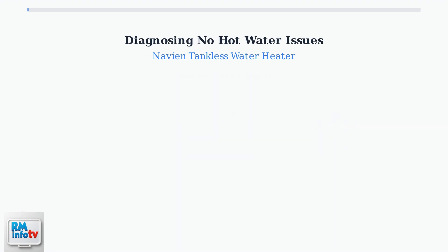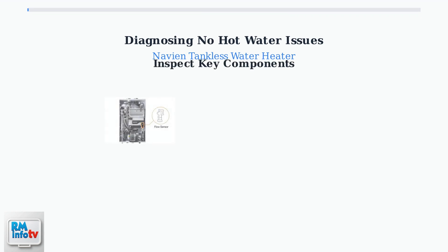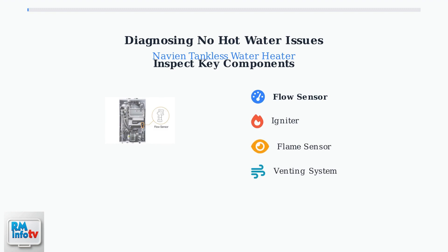If the reset doesn't resolve the issue, inspect key components. The flow sensor detects water movement and signals the unit to ignite — check for damage or blockages that might prevent proper operation. Also, examine the igniter for proper spark generation, the flame sensor for detecting combustion, and the venting system for proper airflow. These components work together to ensure safe and efficient hot water production.